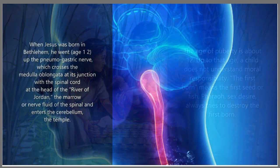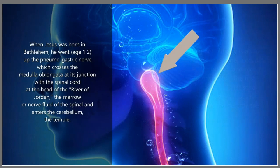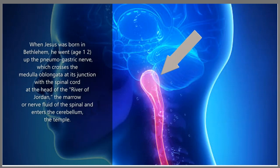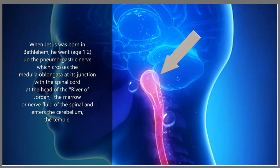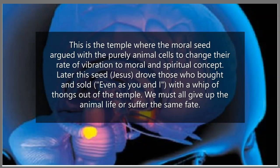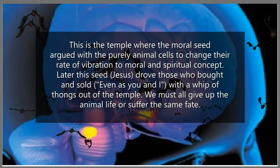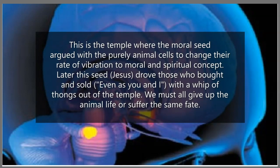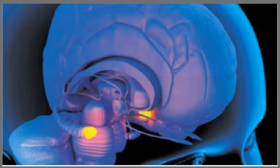When Jesus was born in Bethlehem, he went up the pneumogastric nerve, which crosses the medulla oblongata at its junction with the spinal cord. At the head of the "river of Jordan" — the marrow, or nerve fluid, of the spinal column — it enters the cerebellum. This is the temple where the moral seed argued with the purely animal cells, to change the rate of vibration to the moral and spiritual concept. Later, the seed, Jesus, drove those who bought and sold — "even as you and I" — with a whip of thongs out of the temple. We must all give up the animal life, or suffer the same fate.